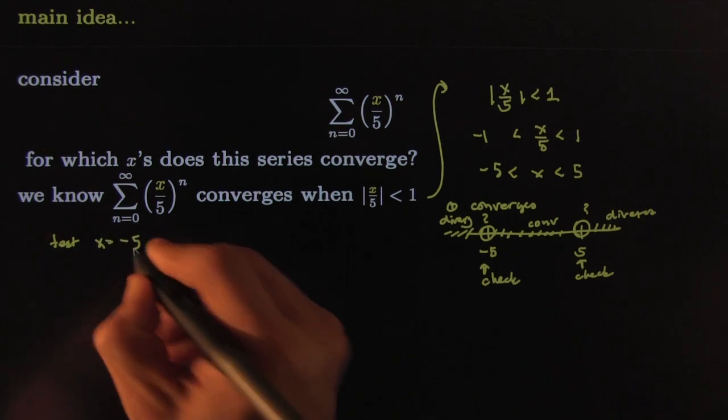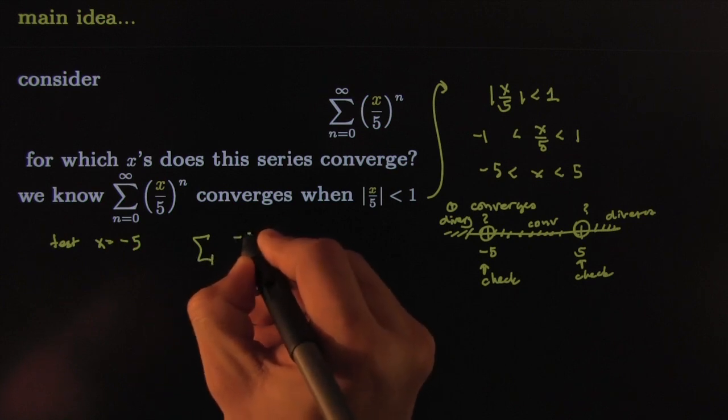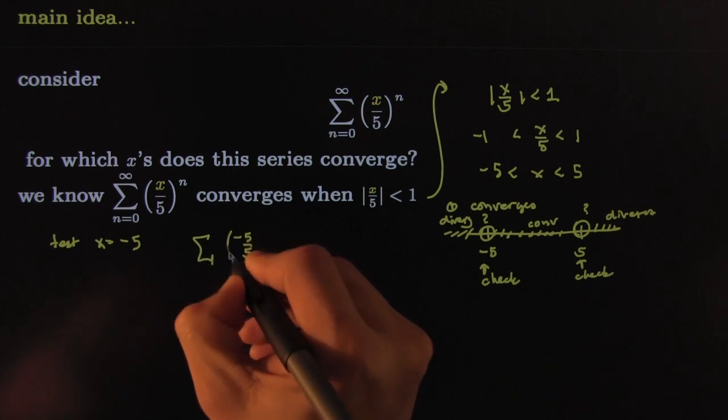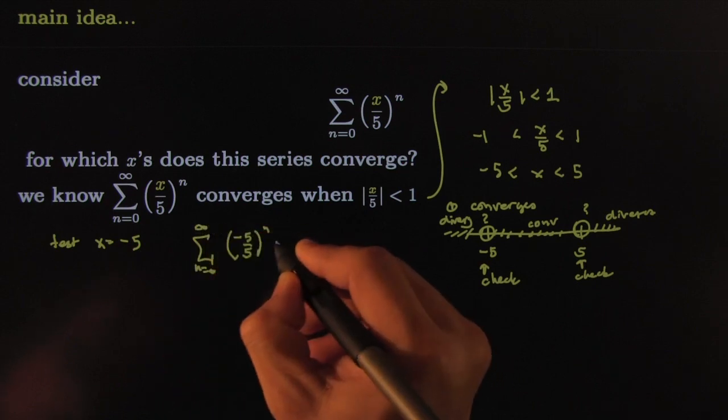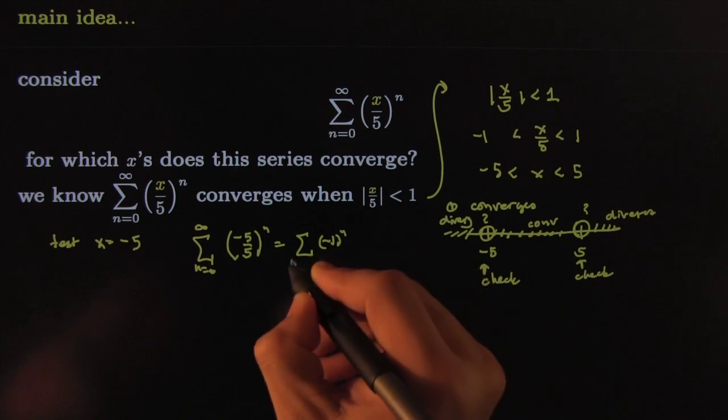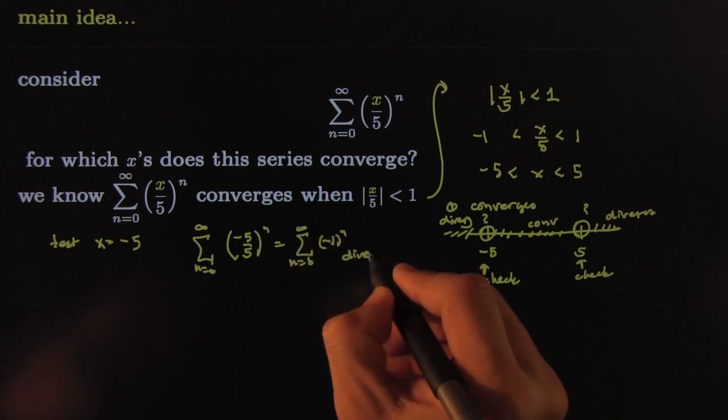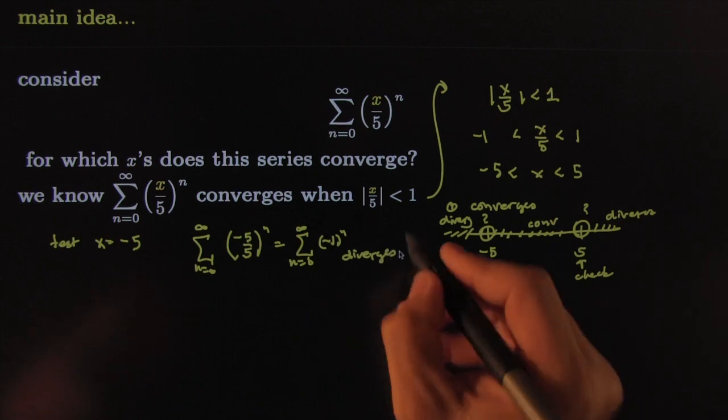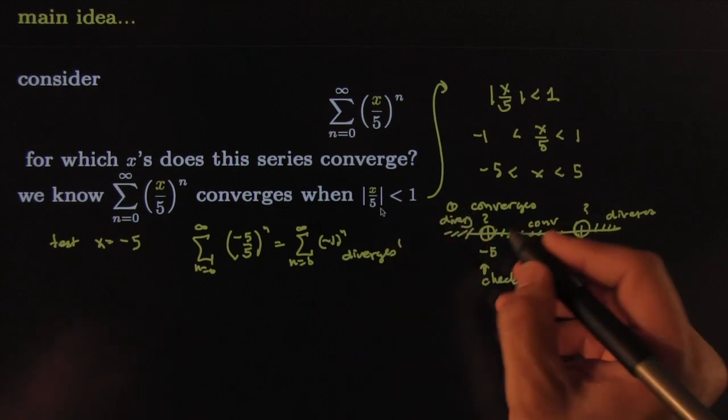That gives us the sum of negative five over five raised to the n as n runs from zero to infinity. Clean it up a little bit—this looks like the sum of negative one to the n as n runs from zero to infinity. Clearly diverges by the divergence test. For example, the limit doesn't even go to zero, so there's no hope. We're done with that, so this would not be included.